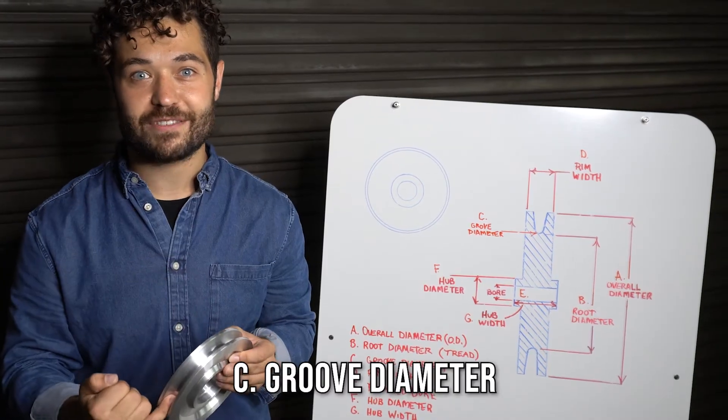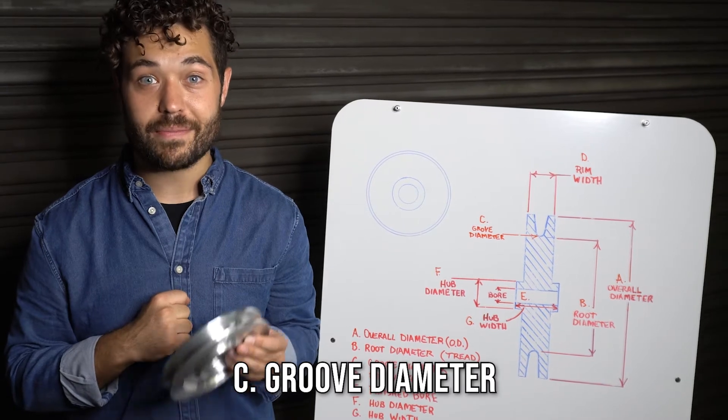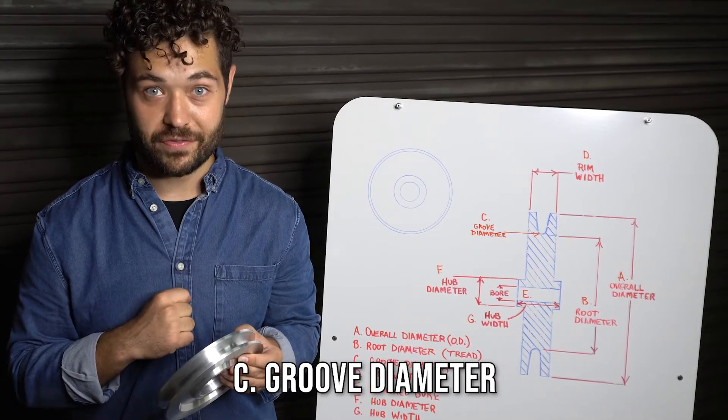The groove diameter is based on the diameter of the rope. It also can be measured on the shiv using a shiv gauge.